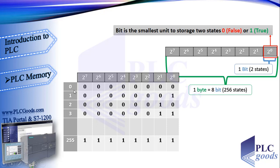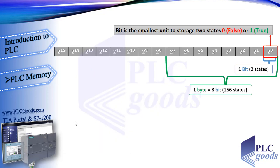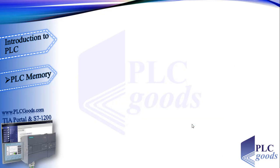1 byte can store 256 states. We can store 0 with 8 zeros, 1 with 7 zeros plus 1, and similarly up to 255. There are many standards to save data such as numbers, time, and date, which will be told later. For example, we can use the 7th bit to store the sign — 0 for positive and 1 for negative numbers — so we can store negative numbers too. These numbers can be an electrical signal value or industrial parameters such as motor speed or water level. If we need more precision, we can have 65,536 states with 2 bytes, which is called a word.